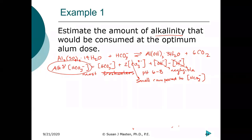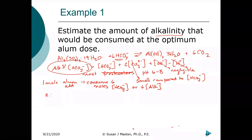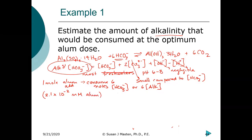Looking at the stoichiometry of this equation: for every one mole of alum we add, we consume six moles of bicarbonate. We previously calculated that we were adding 2.1×10⁻² millimoles of alum. Multiplying that by six millimoles of bicarbonate per millimole of alum gives us the stoichiometric ratio.